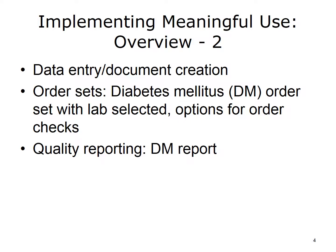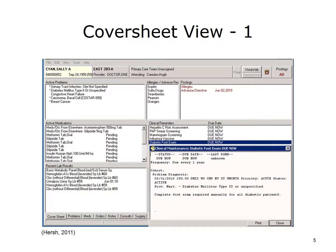The slides will also look at order sets, using the example of an order set for Diabetes Mellitus, or DM, with a laboratory selected and options for order checks. Finally, quality reporting for diabetes will be discussed. This screenshot of the Vista EHR program shows the view that a provider would see on the Computerized Patient Record System, or CPRS, the Windows interface for the EHR.